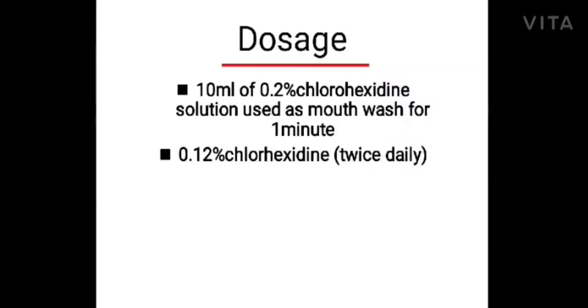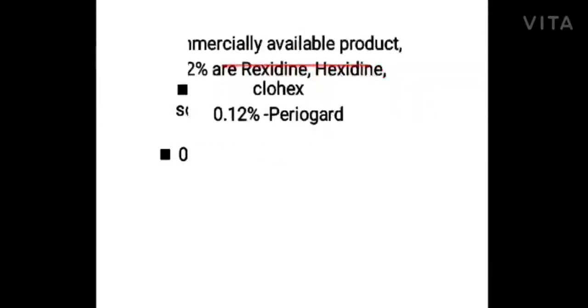Doses: 10 ml of 0.2% chlorhexidine solution used as mouthwash for one minute; 0.12% chlorhexidine used twice daily. Commercially available products: 0.2% is available in the market as Rexidine, Hexidine, and Clodac; 0.12% is available as Periogard.